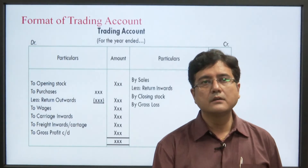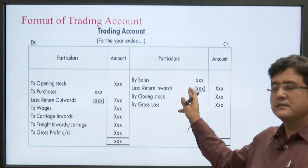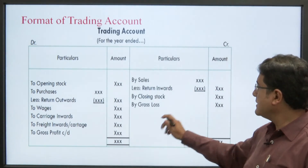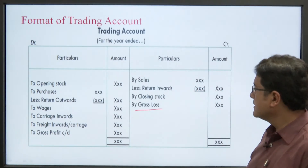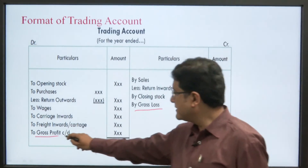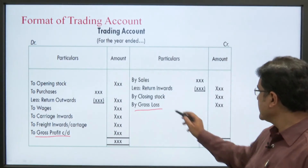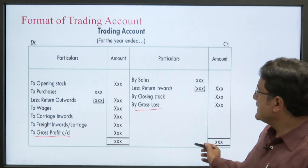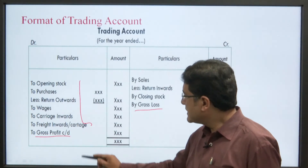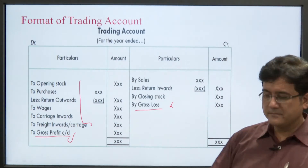This is the specimen of the trading account. On one side is the gross loss or gross profit. The format includes: sales minus sales return, add closing stock, minus the cost-side items — which gives us either a gross profit or a gross loss.